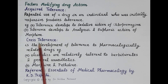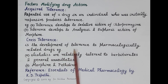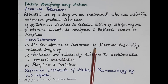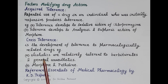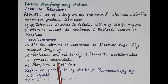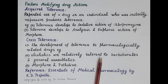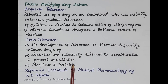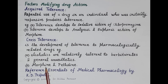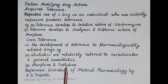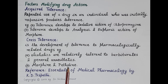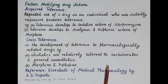Cross tolerance is the development of tolerance to pharmacologically related drugs. For example, alcohol, barbiturates, and general anesthetics are all CNS depressants, so alcoholics are relatively tolerant to barbiturates and general anesthetics. Similarly, if a person is tolerant to morphine, they can also be tolerant to pethidine, since both are opioid analgesics.